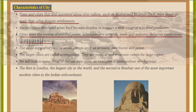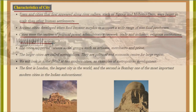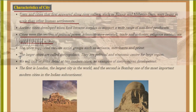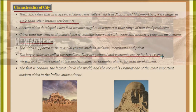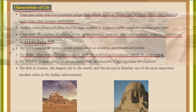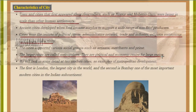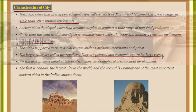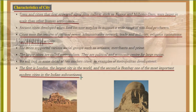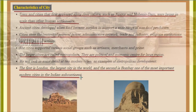Cities supported various social groups such as artisans, merchants, and priests. Larger cities are called metropolises — they are political and economic centers for a large region. We will be looking in detail at two modern cities as examples of metropolitan development: the first is London, the largest city in the world.